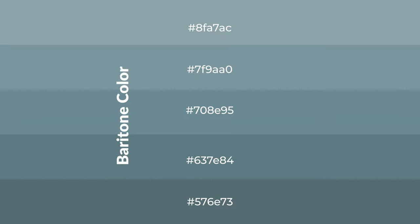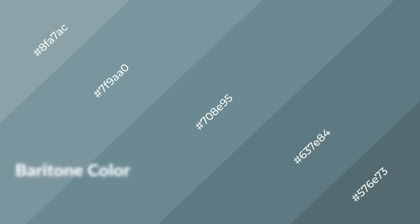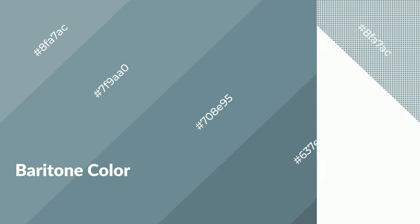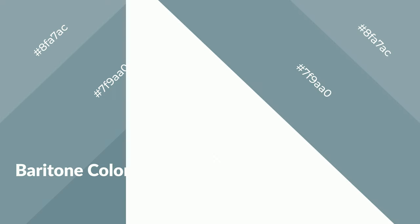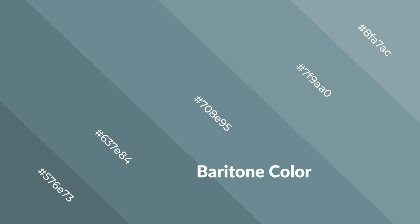To generate shades of a color, we add black to the color, and it is used in patterns, 3D effects, and layers. Shades create depth and drama. Baritone is a cool color and it emits calming, serene, soothing, refreshing, spacious, unwinding, peaceful, and relaxed emotions.